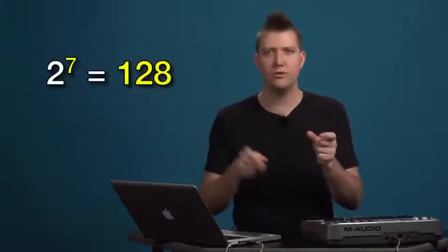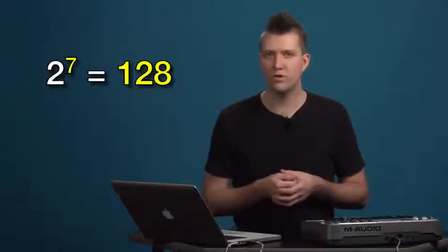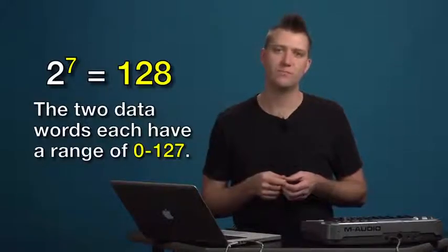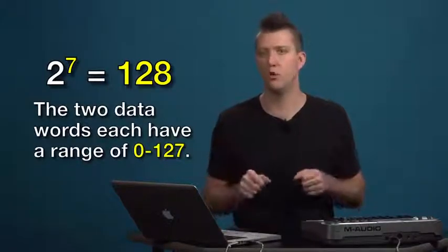Now both data words are seven bit numbers. And as we heard earlier, if we want to know how many values there are in a word, we take two to the power of the length of the word, and we get the number. So these are seven bit words, so we get messages from zero to 127. You're going to see those kind of numbers all over the place.